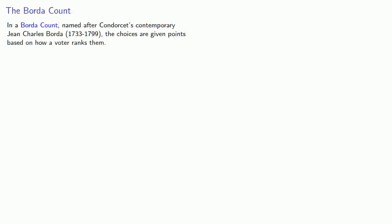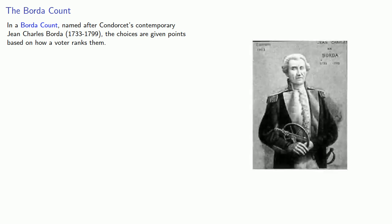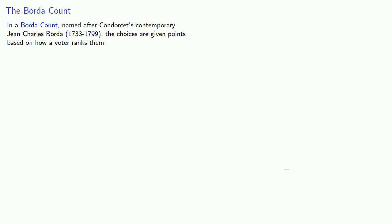One possibility is something called a Borda count. In a Borda count, named after Condorcet's contemporary Jean-Charles Borda, the choices are given points based on how a voter ranks them. A last place vote gives zero points, the next to last place gets one point, and so on, and the winner is the choice with the most total points.